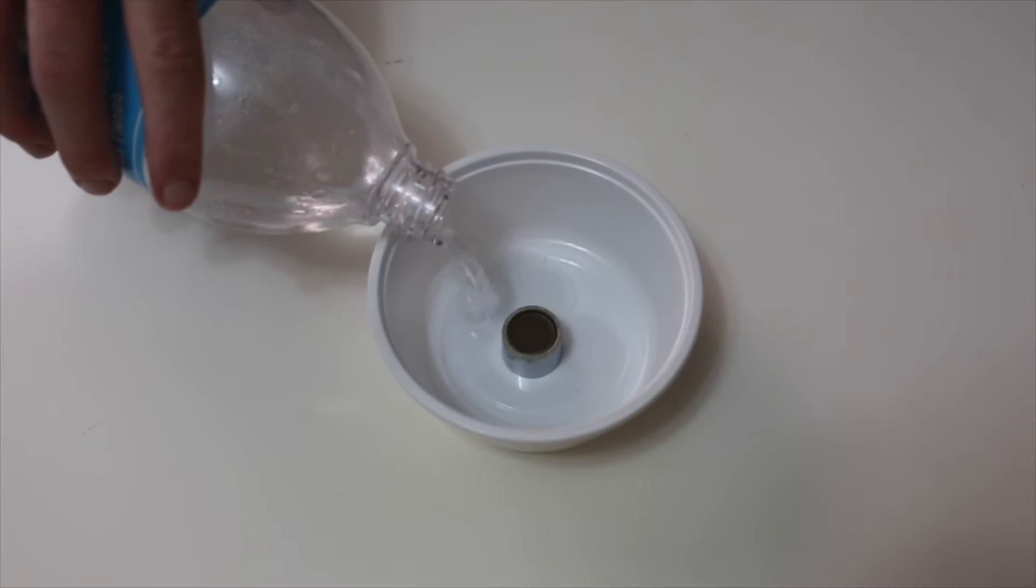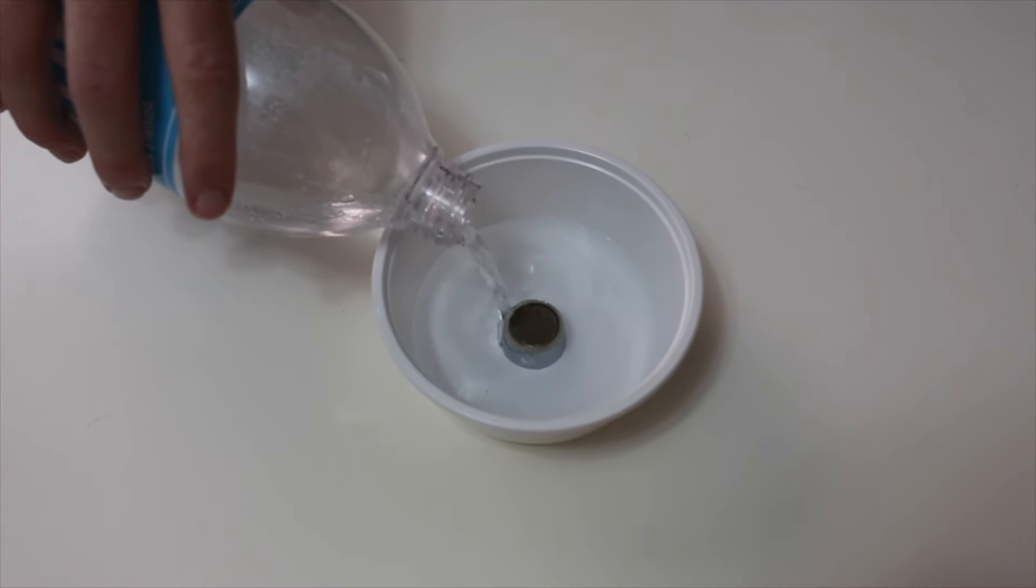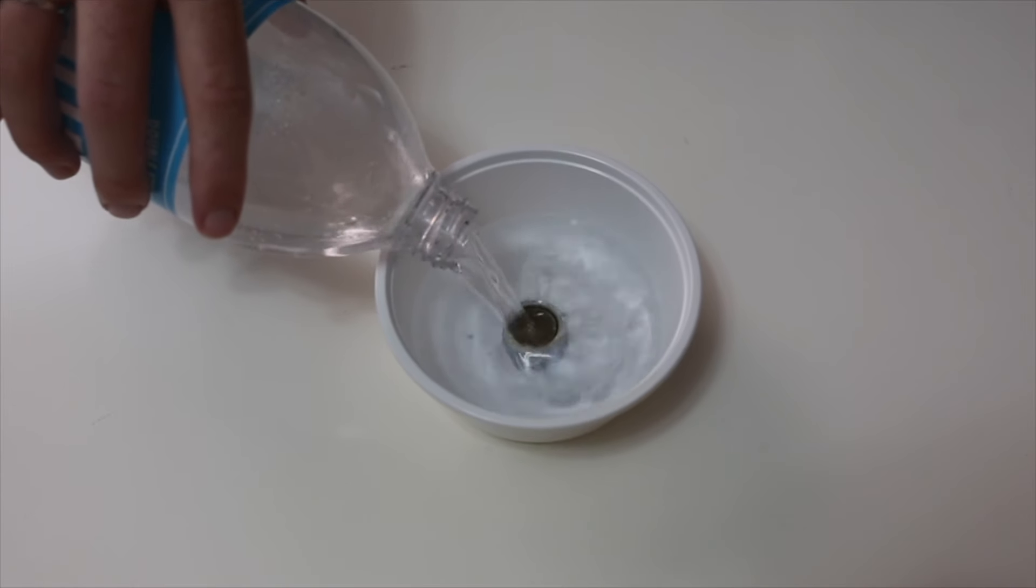Drop the aerator into the bowl and let it sit for about 10 minutes. That's all we had to do here, but you might have to let it soak for an hour, maybe even a couple of hours. It really depends on how bad it's clogged.